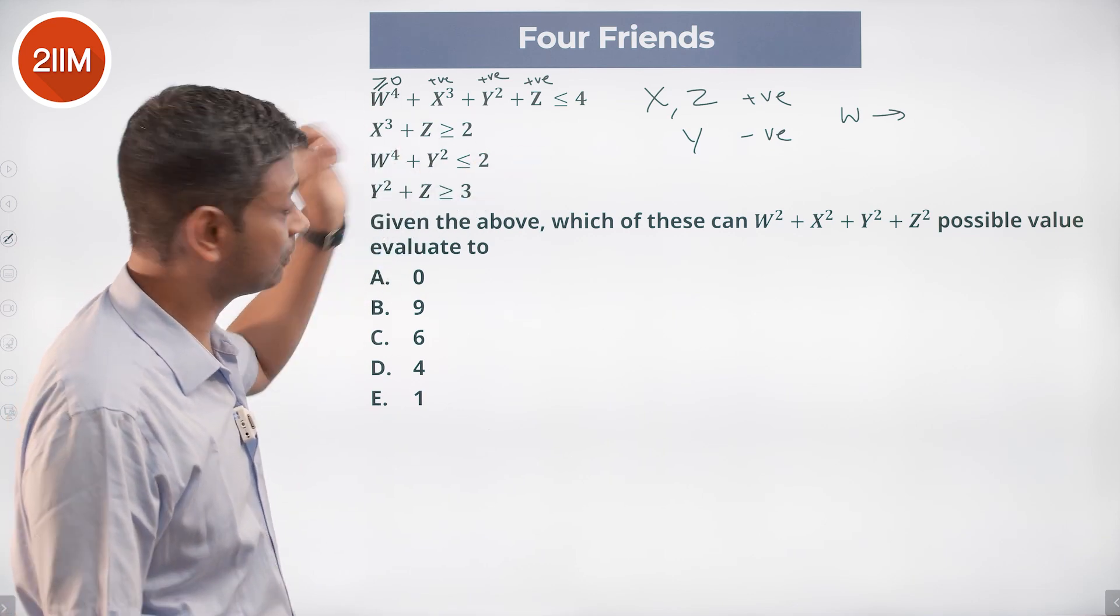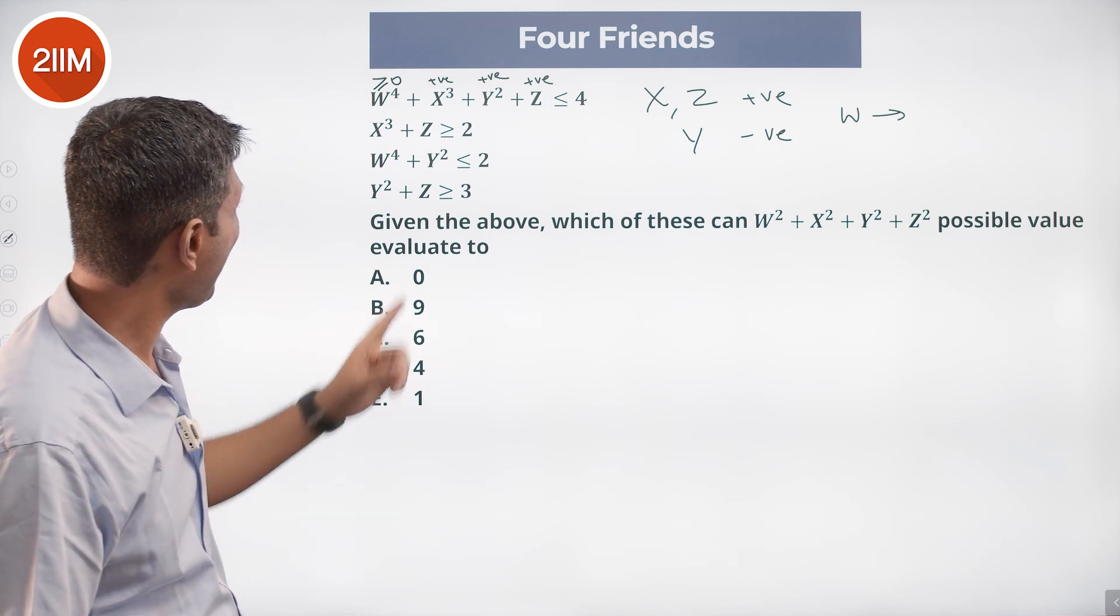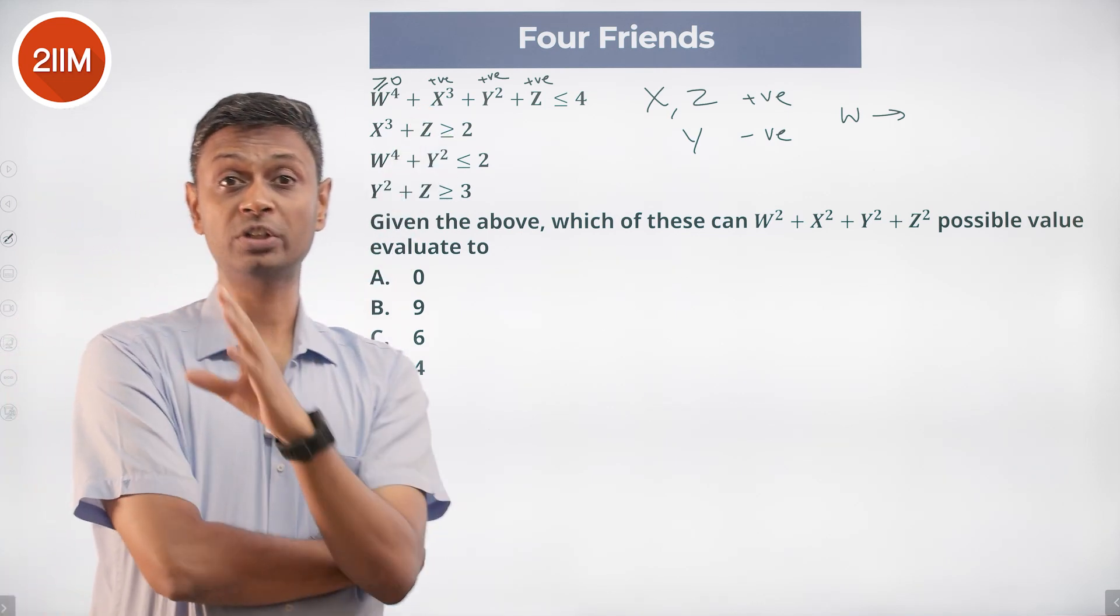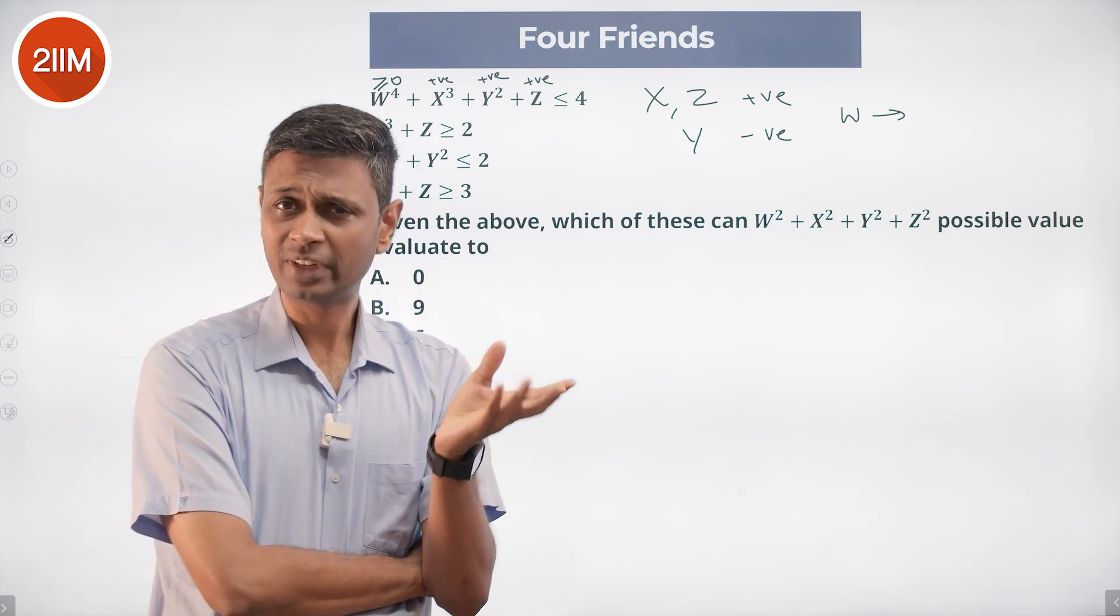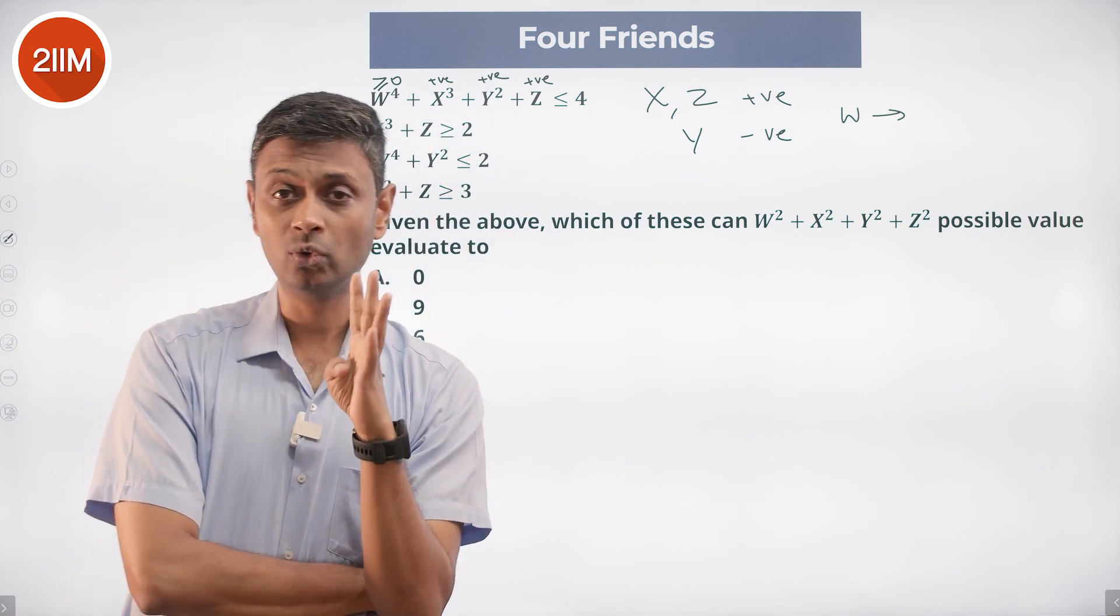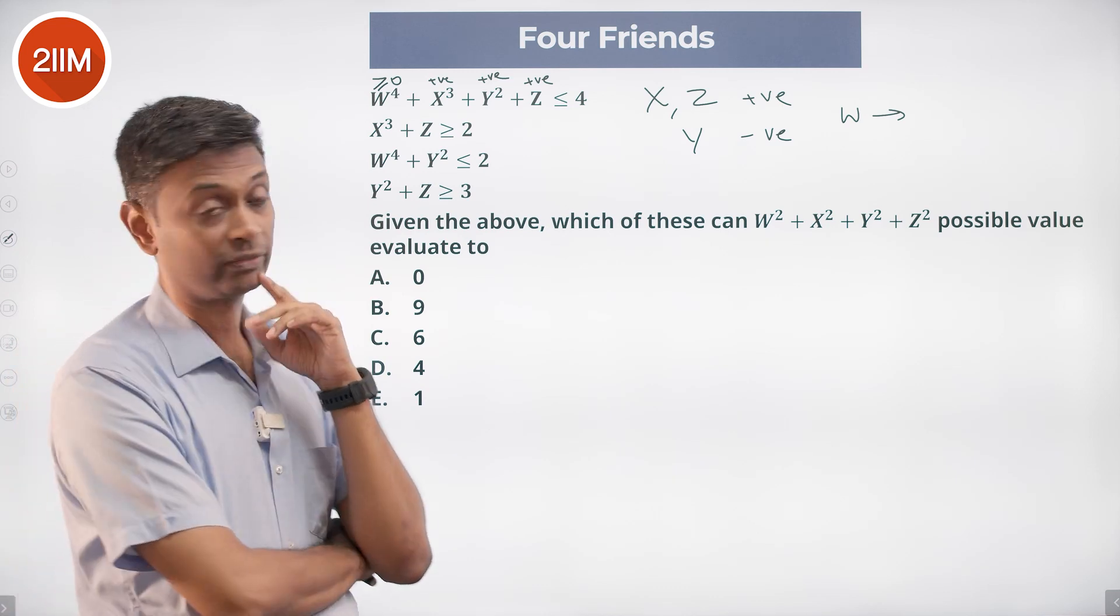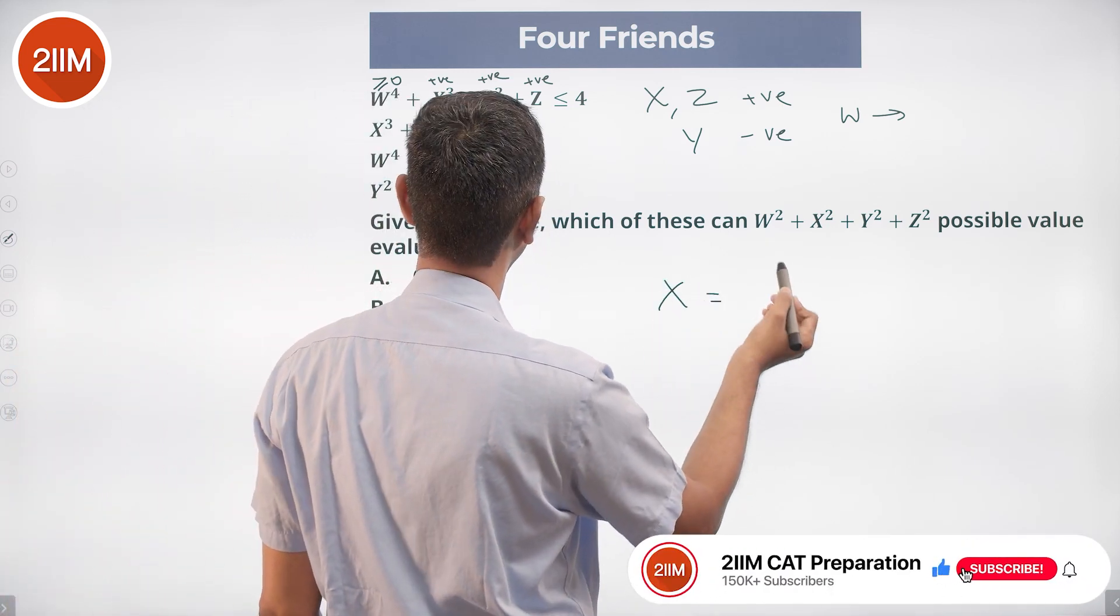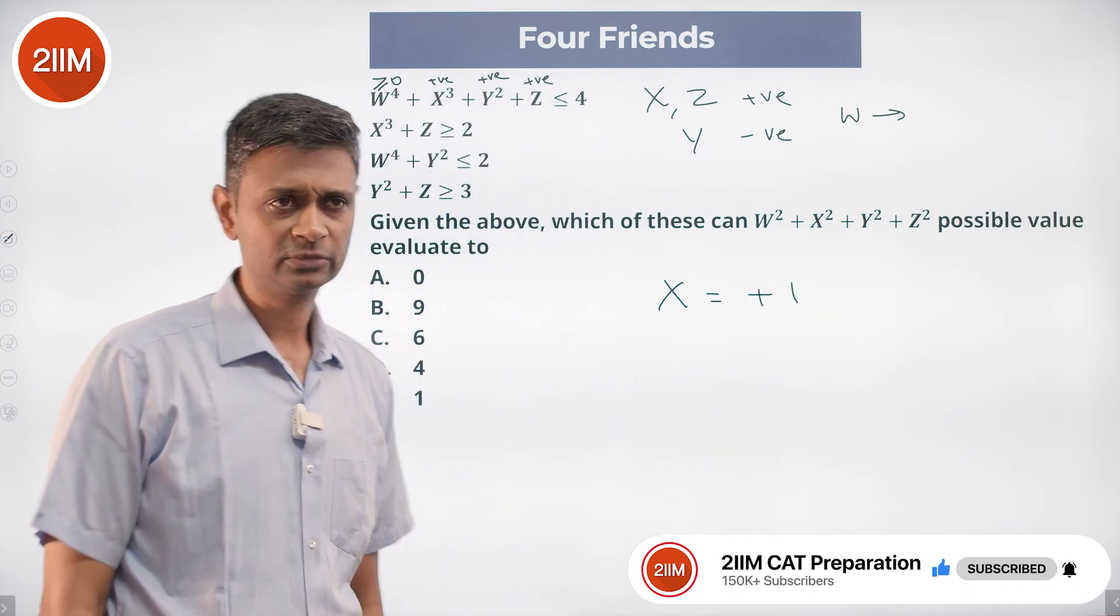Now none of these is negative, and that's a beautiful giveaway because X³ - X is a positive integer. X³ is 1, 8, 27, any of that. If X³ were 8, this cannot work. All four added together is less than or equal to 4. X is positive. Straight away we can say X is equal to plus 1. Nice.